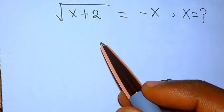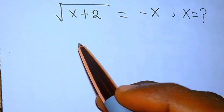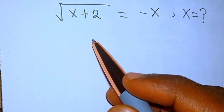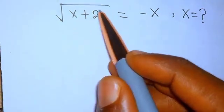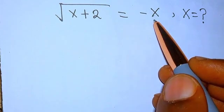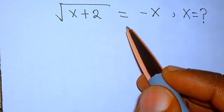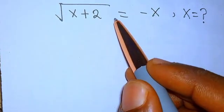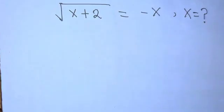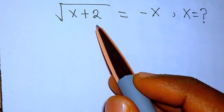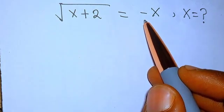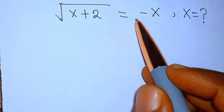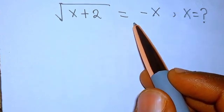Hello, good viewers, you are highly welcome. In today's tutorial we are going to be solving this world challenge problem. We are given the root of x plus 2 equals minus x — what is the value of x? Some people say this will not give us a solution because the left hand side, root of x plus 2, cannot give a negative number, so since we have minus x, which is negative, there is no solution.